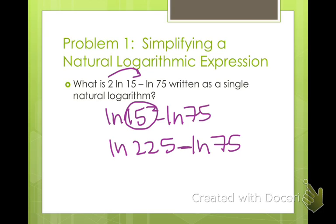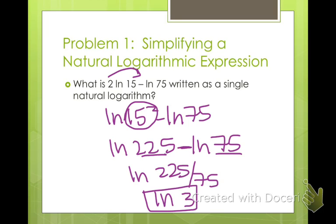And then what do we do with the subtraction? We take our two numbers and divide them. So natural log of 225 divided by 75. And 225 divided by 75 is 3. So as a single natural logarithm, we get natural log 3. So same rules that apply to logarithms also apply to natural logarithms. There's no changes as far as combining and then separating. Exactly the same.